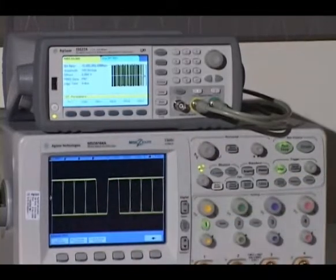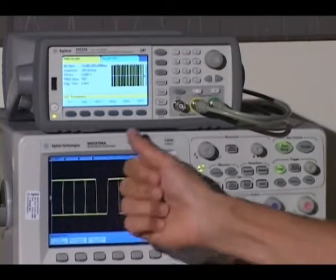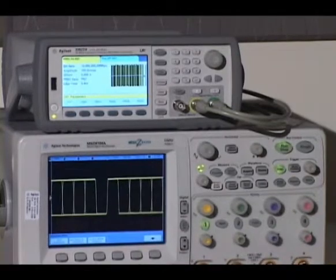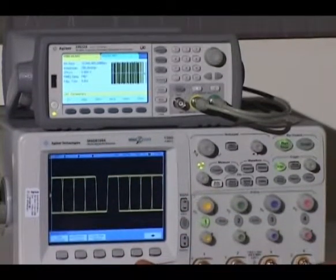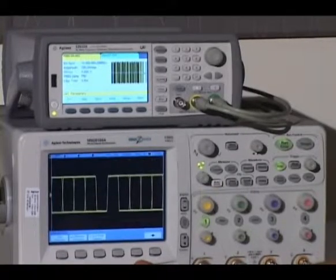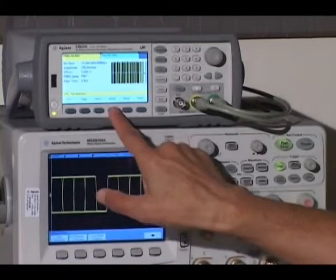Now we can select a pseudorandom number. You can see that the 33522A that we're using here provides several of the standard PN numbers for this particular test. We're going to select PN15.